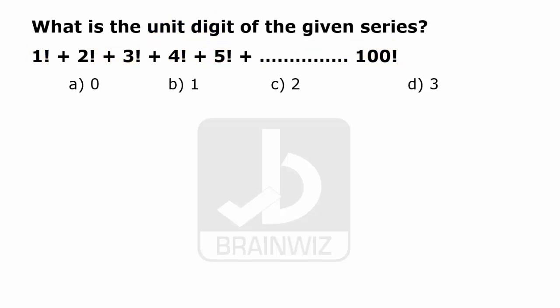Finding the units digit is quite easy. In this question, we have 1 factorial plus 2 factorial plus 3 factorial plus 4 factorial plus 5 factorial and so on to 100 factorial. We need to find out the last digit.